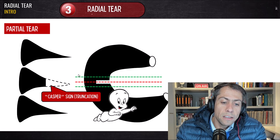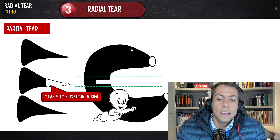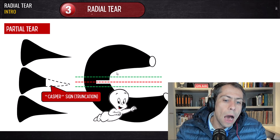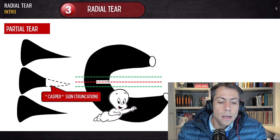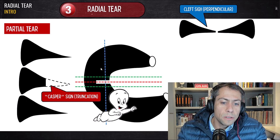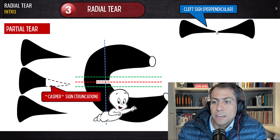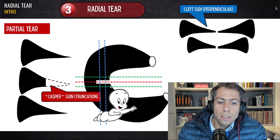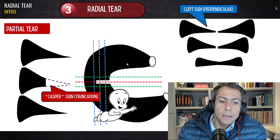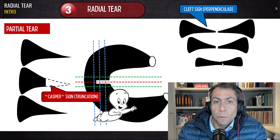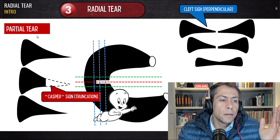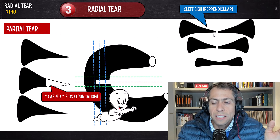That's how we see the partial meniscal tear on the same plane of the tear — for the meniscal body that is the coronal plane; for the anterior horn and posterior horn, it's the sagittal plane. Now let's see how we'll see this on the plane that is perpendicular to the radial tear — in this case the sagittal plane. We will see the cleft sign: a cleft at the inner margin of the meniscus. It's just a partial cleft sign because at the periphery the meniscus is normal.